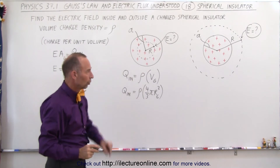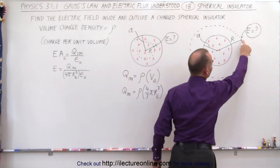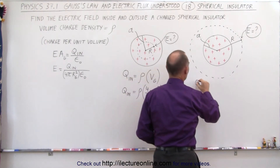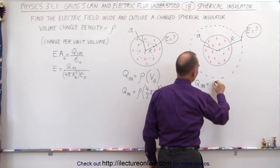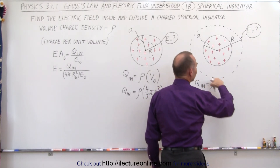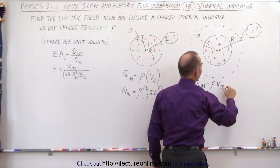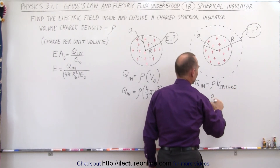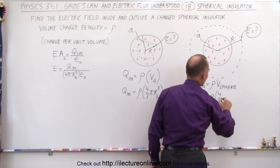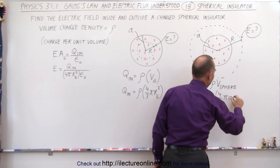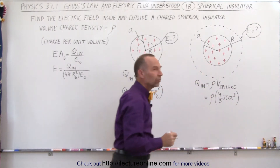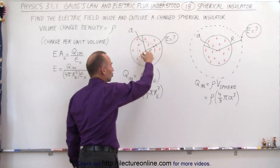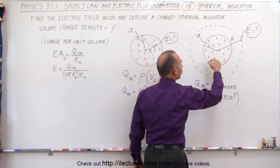If we go to the point where we're trying to find the electric field outside the sphere, then of course it's all of the charge. In this case, Q inside is going to equal the density times not the volume of the Gaussian surface, but simply the volume of the sphere, because there's no charge outside the sphere. So this equals the charge density times four-thirds pi a cubed, where a is the radius of the sphere.